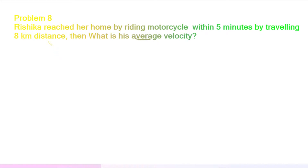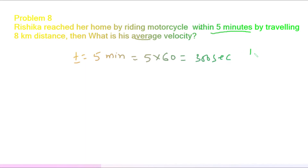In this question, time is given as five minutes. We know that time is always in seconds because its unit is second, so we have to convert it. We multiply by 60, giving 300 seconds, because in one minute there are 60 seconds.